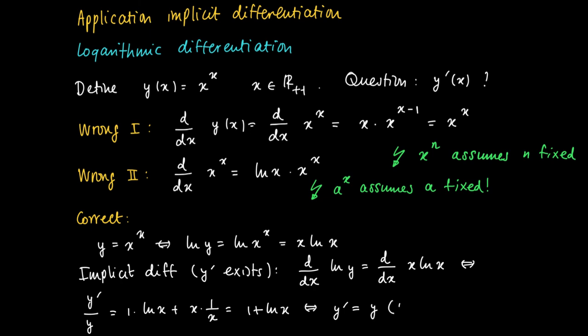Now multiplying the left and the right hand side by y, we get y prime equals y times 1 plus ln x. And we know y because y equals x to the power x. So we get x to the power x times 1 plus ln of x.